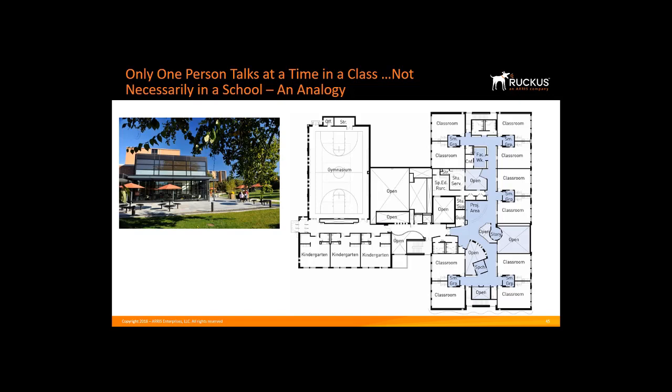Applying this analogy, today we are telling our APs only one person talks in a school, while we could have told them that only one person talks in a classroom. We must give the AP a means to figure out whether that person is talking inside the classroom or in another classroom in the school. That's where the concept of BSS coloring comes in.